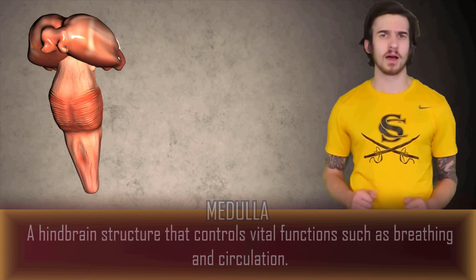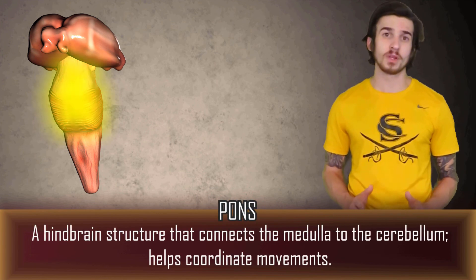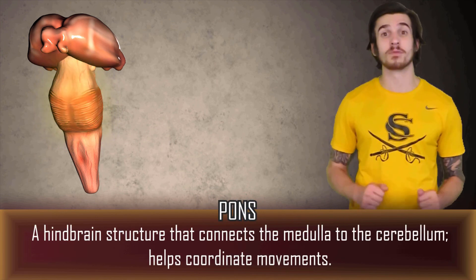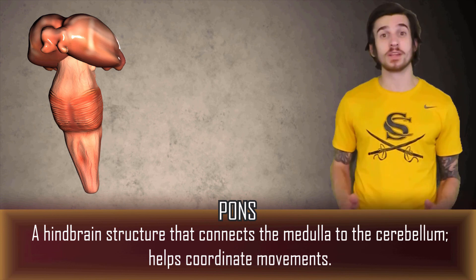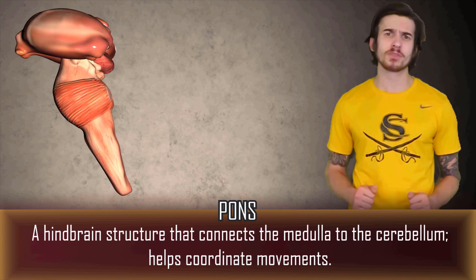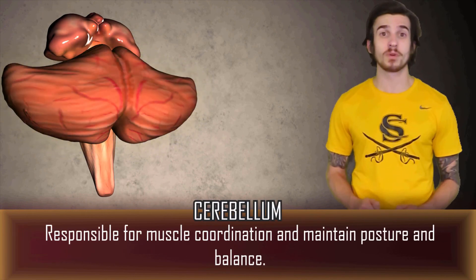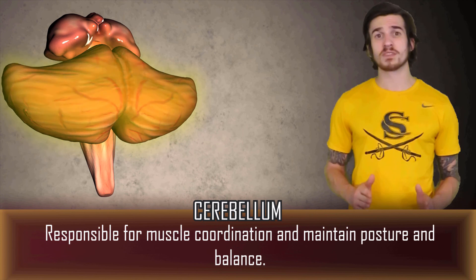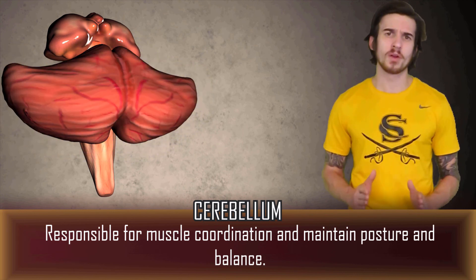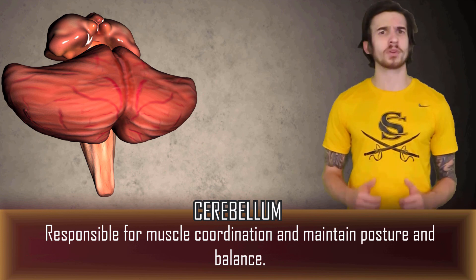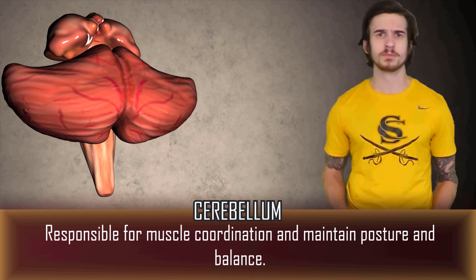Directly above our medulla we have the pons. The pons is a hindbrain structure that connects the medulla to the cerebellum. Pons is Latin for bridge, which makes sense because it connects our midbrain to our forebrain. On each side of the pons, large bundles of axons connect to the cerebellum. The cerebellum is responsible for muscle coordination as well as maintaining posture and balance, and also for some of our automatic movements and motor skills — so you're able to text away at your phone without even looking at your keyboard, all because of your cerebellum.